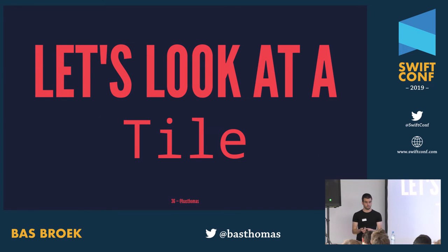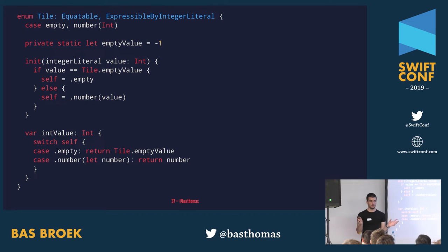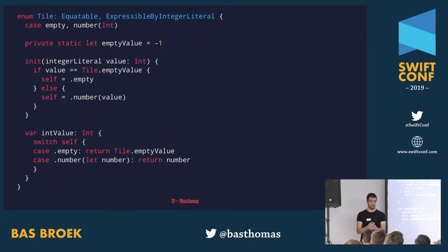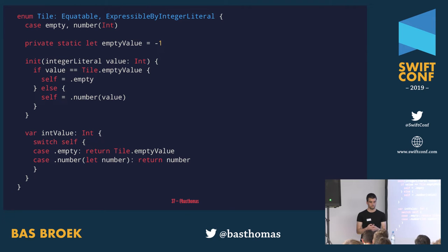Let's look at Tile — another piece of abstracting away a finicky type of just Int. We make it expressive when we have an empty tile versus a numbered tile. Swift is really nice here where we have enums with cases with associated types. We have a simple initializer that takes an integer, and we can get the integer value which we'll later need to solve the puzzle. For the empty tile we use minus one, which might remind some of you of 'not found' — not ideal, but it does the trick.